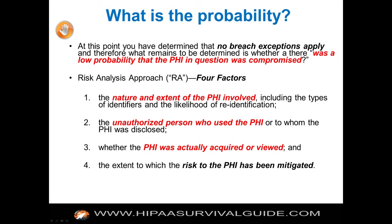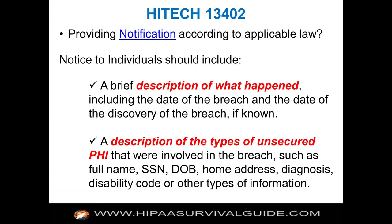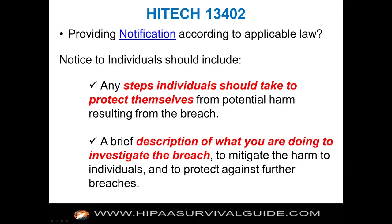The flowcharts referenced are part of our breach notification product sold as part of our subscription, or you can buy the breach notification framework itself. Now, notification of stakeholders: once you've determined you must notify, provide notification according to applicable law under Section 13402. Notice to individuals should include a description of what happened, the types of unsecured PHI involved — such as full name, social security number, date of birth, home address — and steps individuals should take to protect themselves.